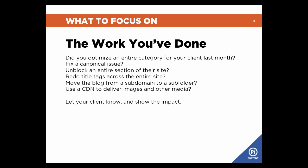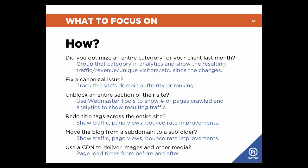The next thing we're going to focus on is the work that you've done. So if you fixed a canonical issue, if you redid title tags, if you moved a blog from a subdomain to a subfolder, optimized an entire category — it's important to let your client know and then to track and show the impact those changes have had. For a canonical issue fix, track the site's domain authority or ranking from before to after that change. For title tags, show traffic, page views, and bounce rate improvements for that set of pages. If you optimize an entire category, group that in analytics and continue to report on it every couple of weeks or months — report on it every single time to show the improvements made.